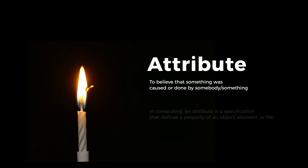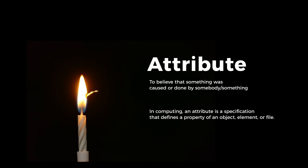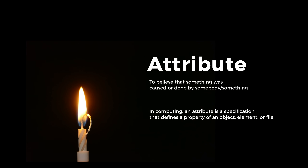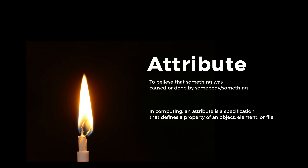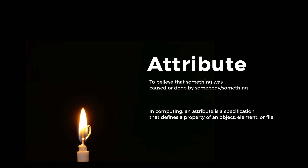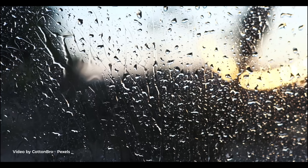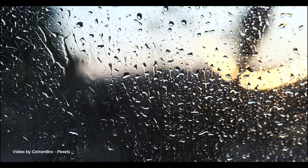In computing language, an attribute is a specification that defines a property of an object, element, or file. So what does this mean? Anything we see around us, and every event, is changing the outcome of several different things. Simplest example: